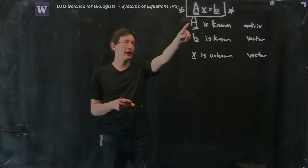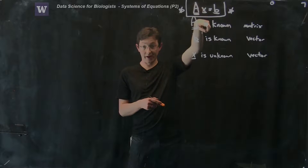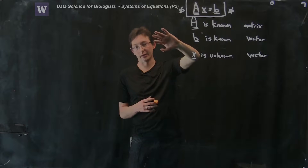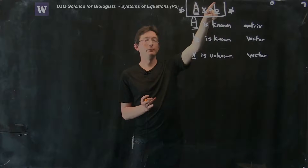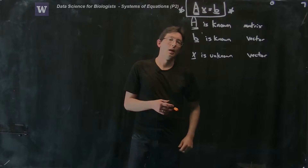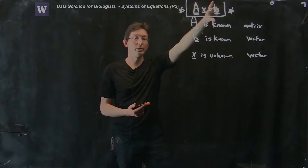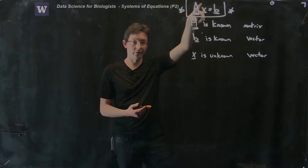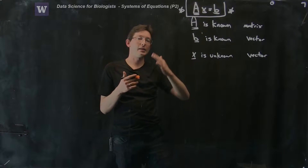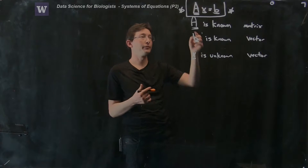Let's say that I had this Ax equals b, and x is my unknown vector I'm trying to solve for. This could be the age of Sally and Bob, for example, and b were some numbers that I was given. What if those numbers in b changed, or they were different for a different set of people, for a different x vector? I don't want to keep repeating the same procedure over and over to resolve a new system.